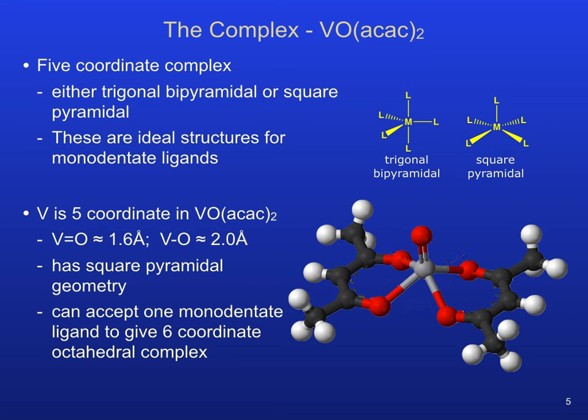This shorter distance strongly implies multiple bond character for the axial bond, and the vanadium ion is positioned above the geometric plane formed by the four oxygen atoms in the ac-ac ligands. The coordinating position opposite the axial V=O bond is vacant and can accept one monodentate ligand to form a six-coordinate complex.